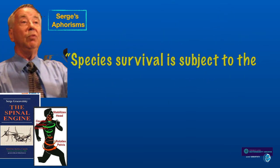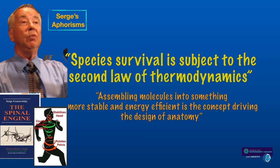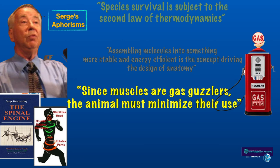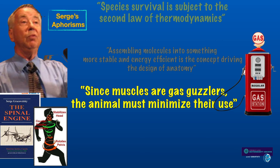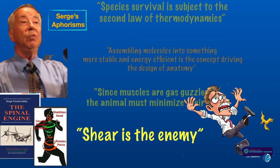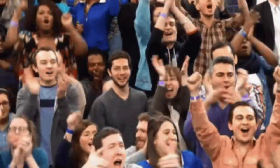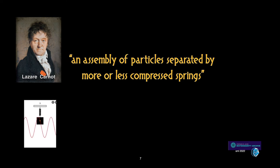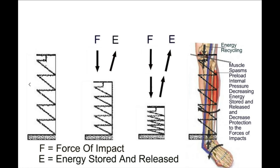A key finding was that kangaroos stored much of their energy in the springs in their legs, obtaining that energy from the bounce on the ground — the ground reaction force. This was a key finding because it meant the bounce in our step may be energized by external forces rather than internal muscles. But Alexander's work needs upgrading, and that gets us to Grecovetsky's pithy aphorisms: using internal springs powered by an external energy source makes thermodynamic sense, as does replacing internally powered muscles with externally powered springs. And we mustn't forget that shear is the enemy — any way an organism can reduce shear is a victory for the second law of thermodynamics.